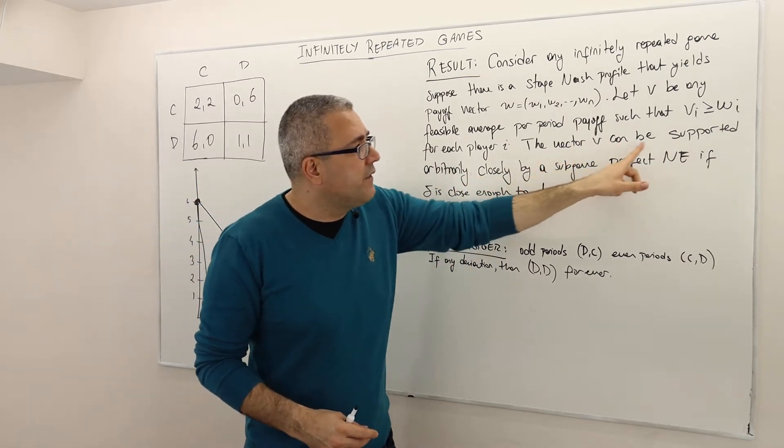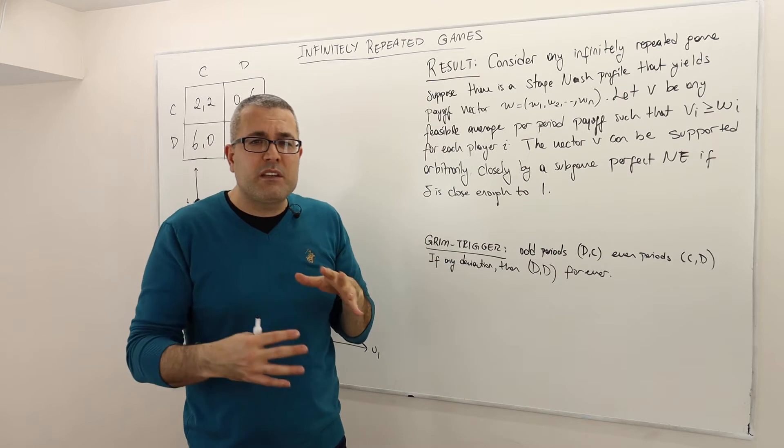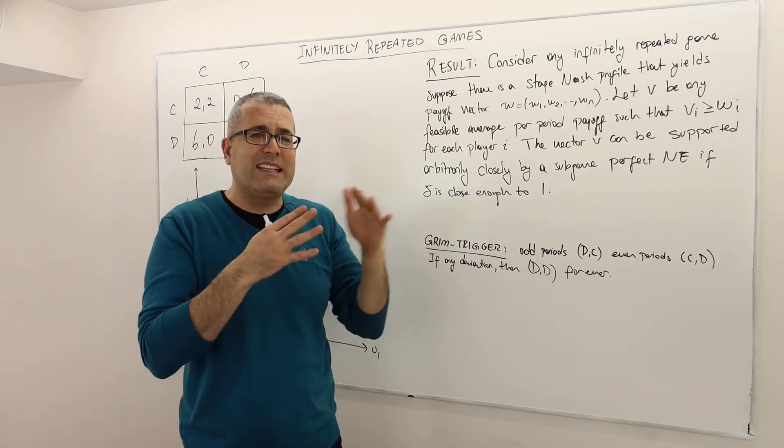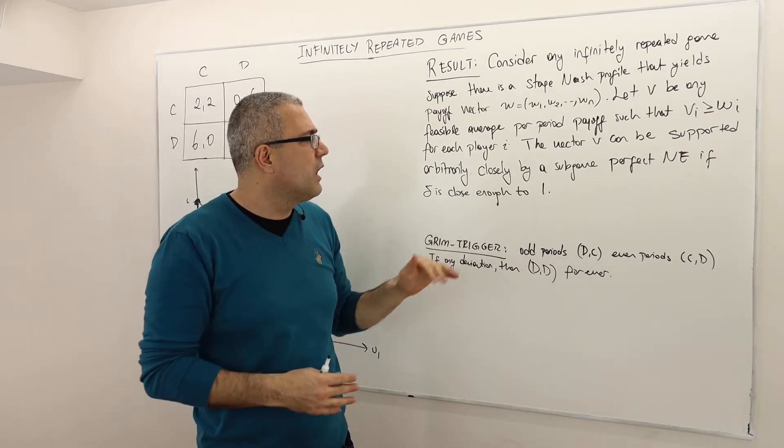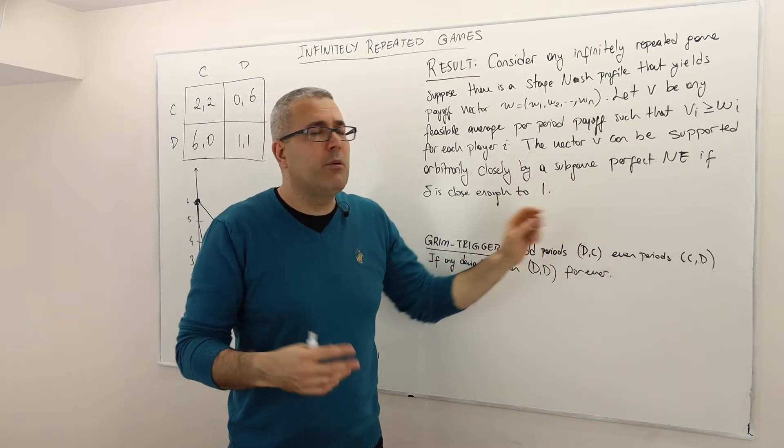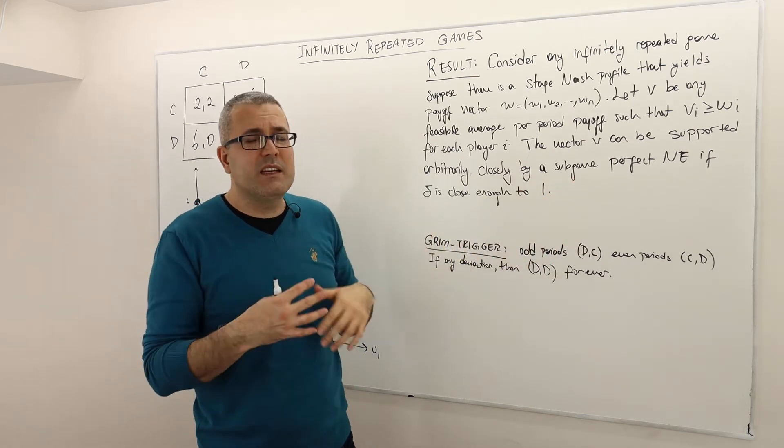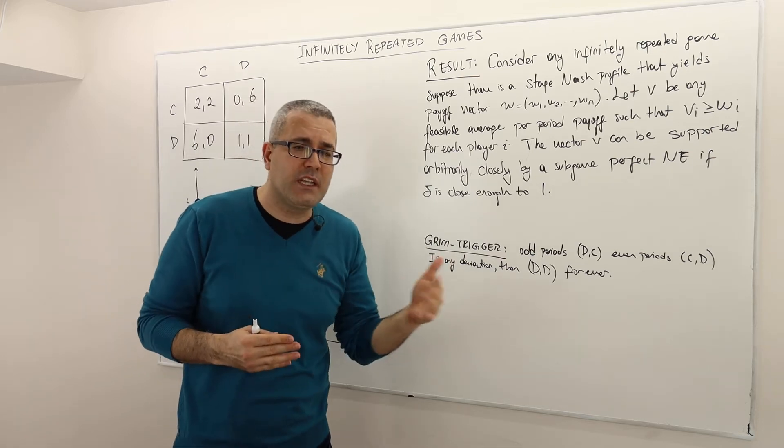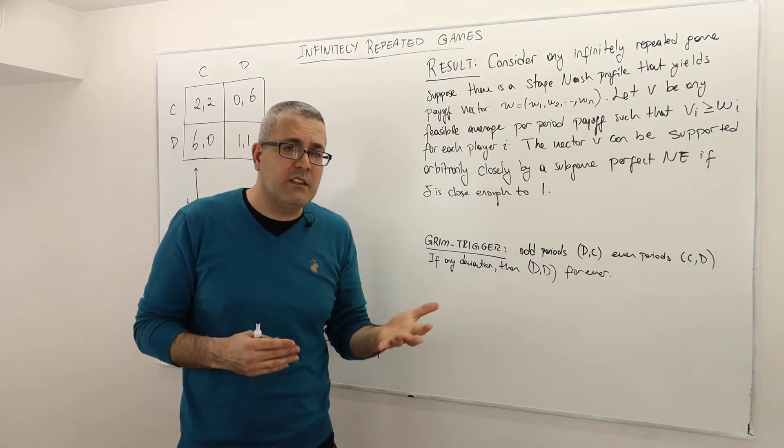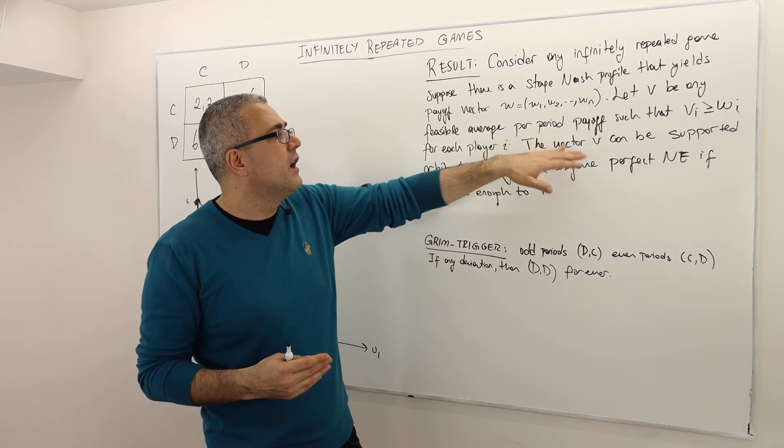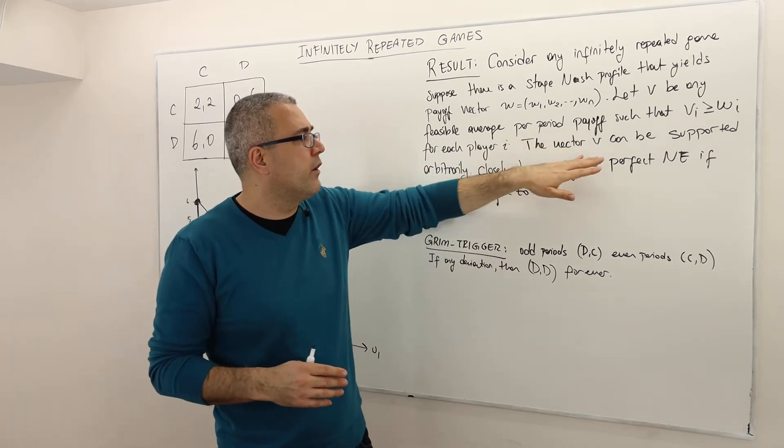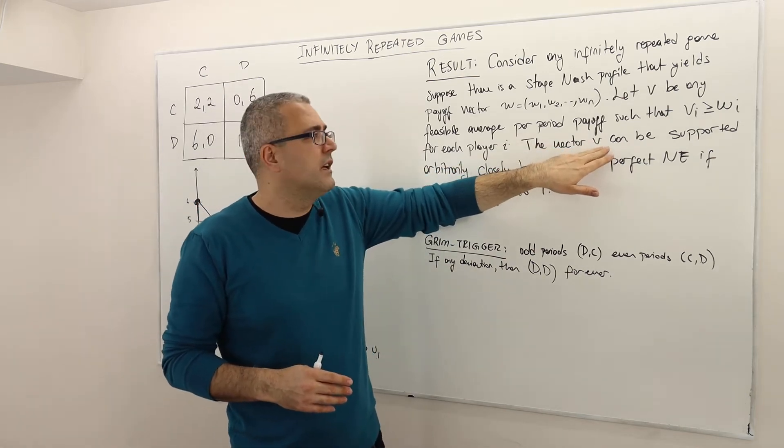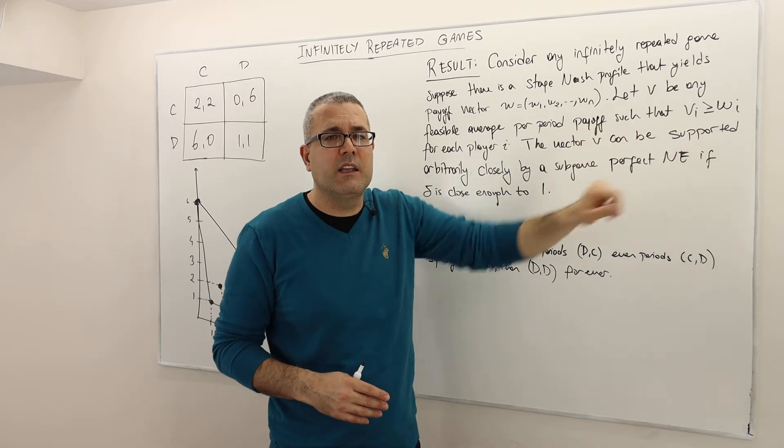Well, then this vector V can be supported arbitrarily closely, maybe not exactly but arbitrarily closely, by a subgame perfect Nash equilibrium if delta is close enough to 1. Meaning, if players are patient enough, we can actually guarantee these players payoff very close to this payoff VI, alright?